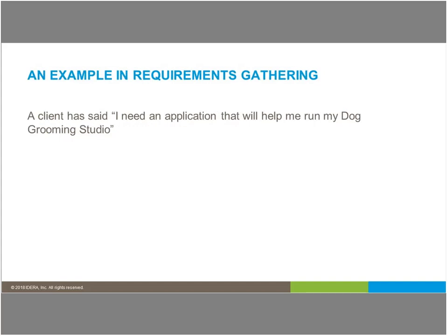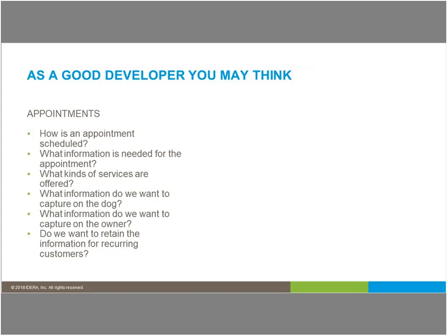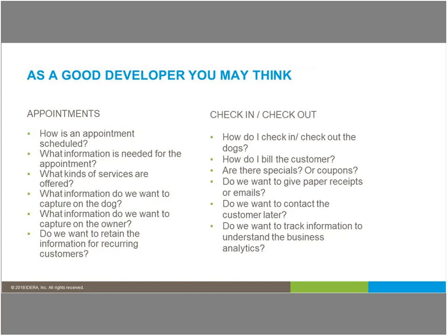If you were trying to gather requirements, the client might say, 'I need an application that will help me run my dog grooming studio.' If you're just using words, it's like: the application needs to schedule appointments, check in, check out dogs, charge the customer. But as a good developer, you'd be thinking about how appointments are scheduled, what information is needed, what kinds of services are offered, what to capture on the dog and owner, and whether to retain information for recurring customers. For check-in and check-out: how do I check in or check out dogs, how do I bill the customer, are there specials or coupons, paper receipts or emails, and do we want to track business analytics? A whole conversation starts from that simple statement of 'I need my application to do three things.'